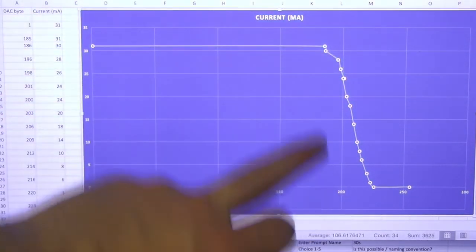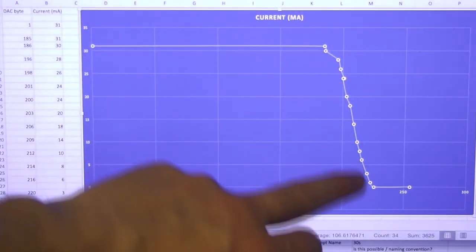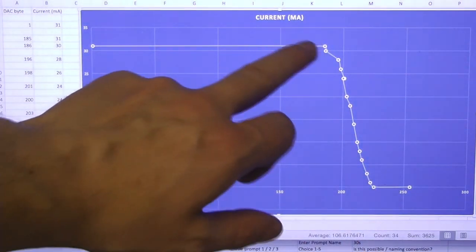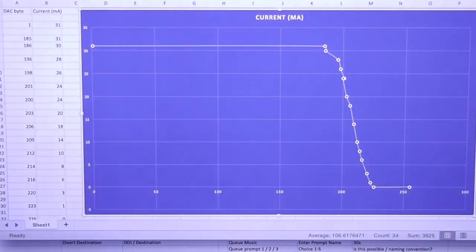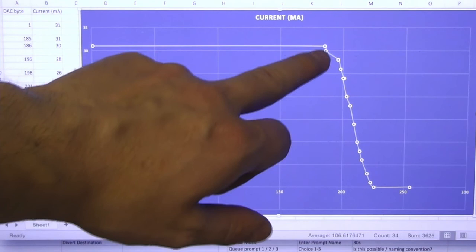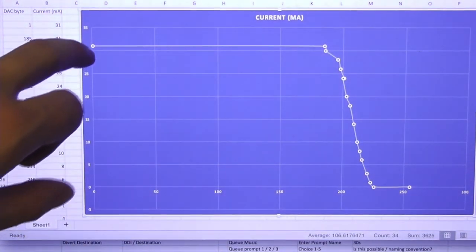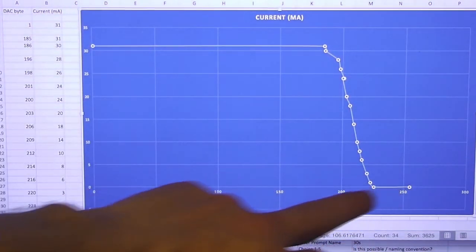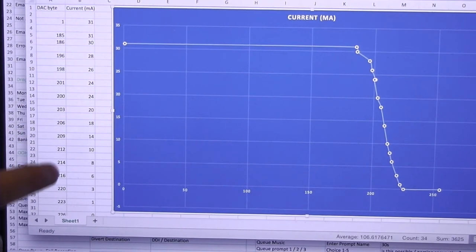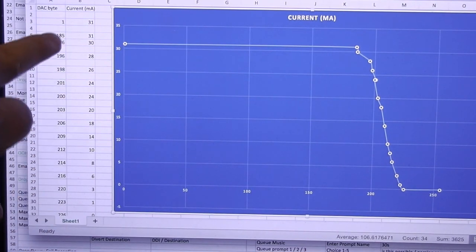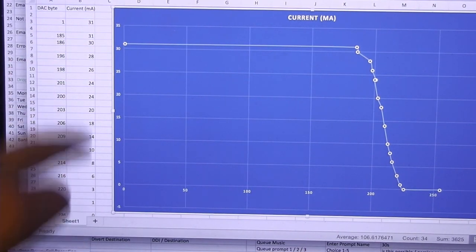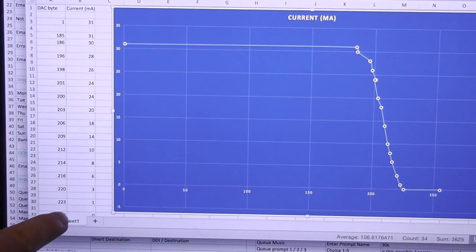And then that linear region finishes at about 225 on the DAC. I don't really know for sure, but this is probably something to do with the transistor saturating at some point and turning off at some point. If I was going to guess, I would say this is saturated and this is off. As you can see, I didn't bother measuring every single value. I just picked the most interesting region to measure.